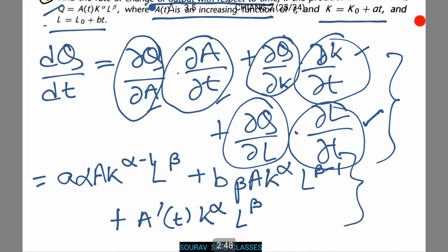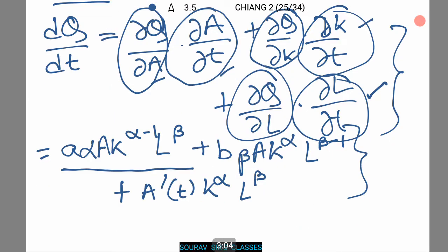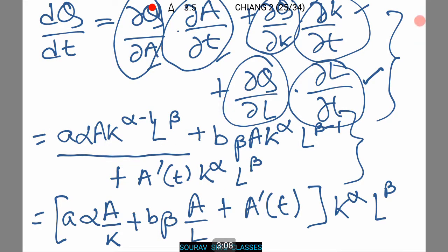First find dQ by dA then dA by dt, dQ by dK, dK by dt and dL by dt and dQ by dL. And then put it in this formula that I have already shown you and you will get the same result. If you do not get the same result please check your differentiation once more.